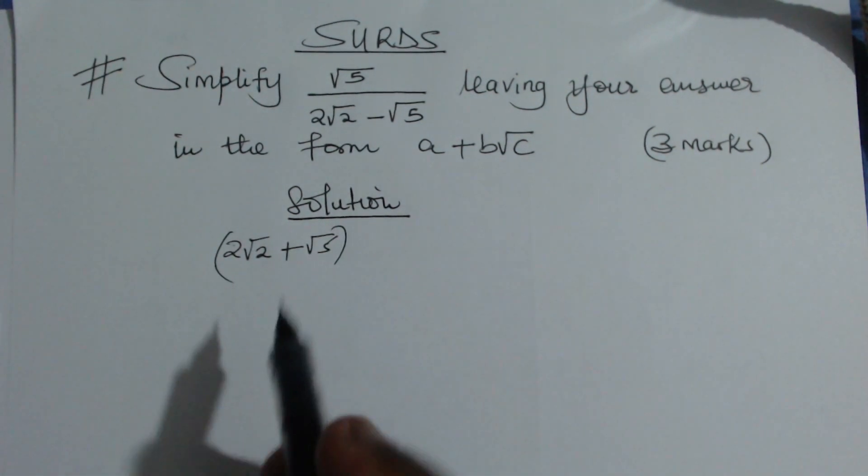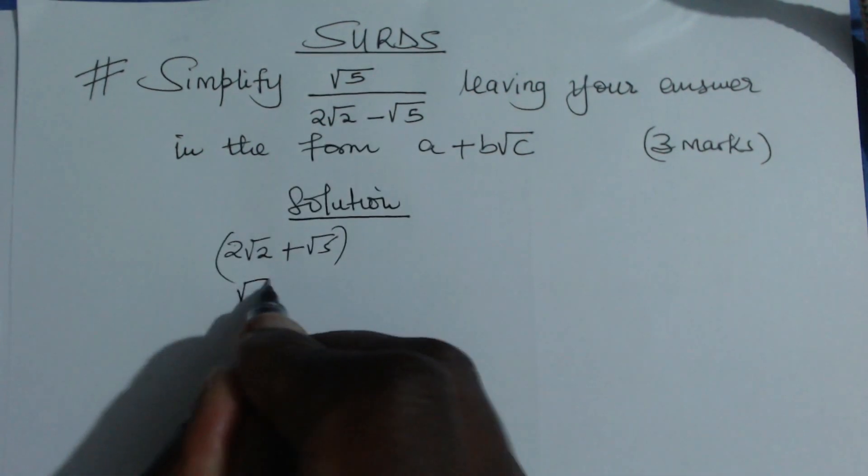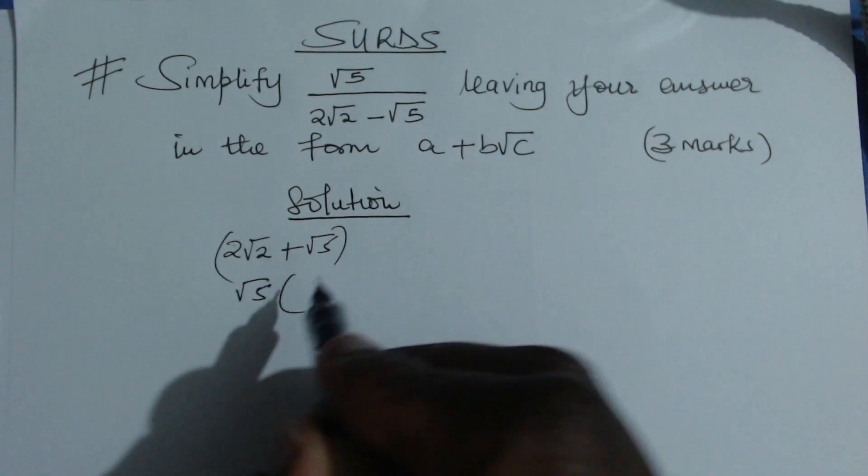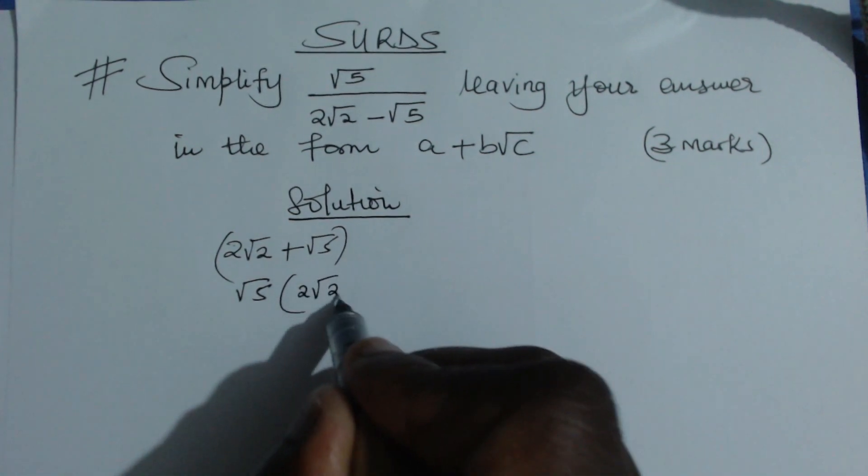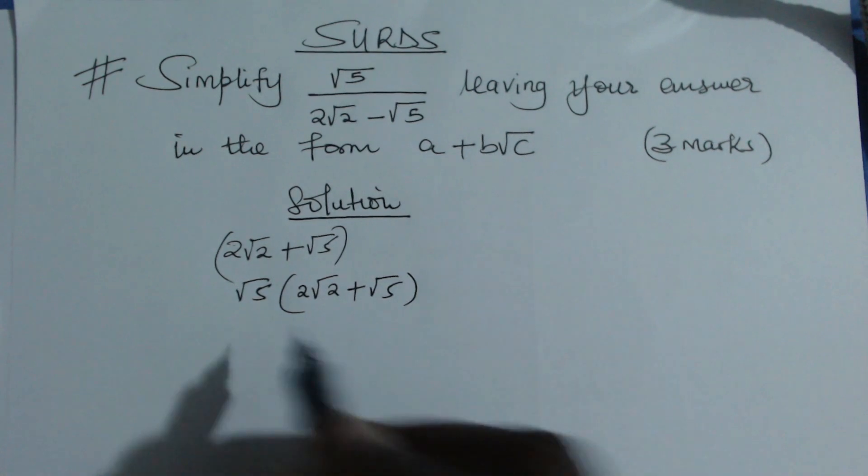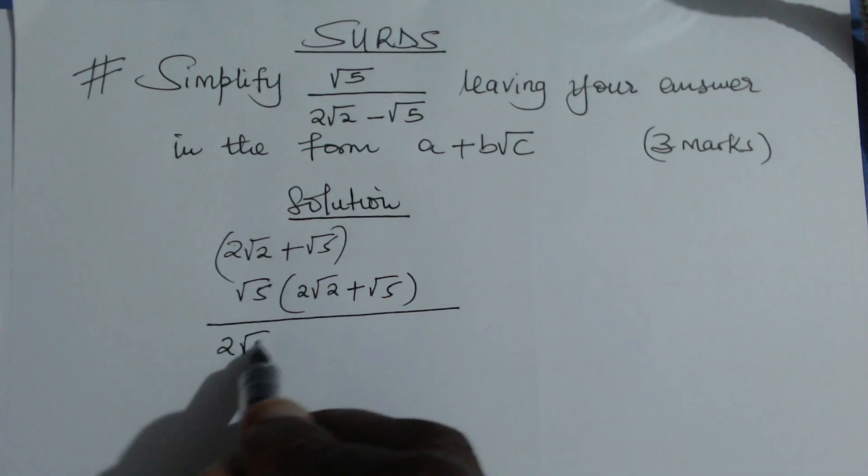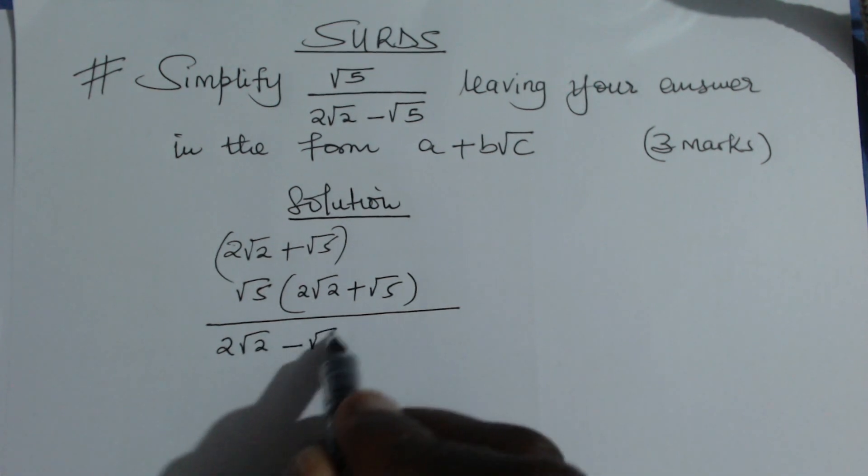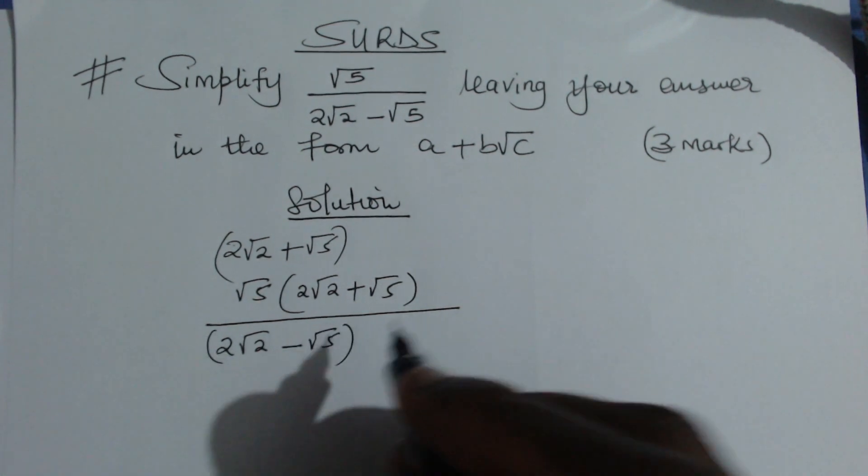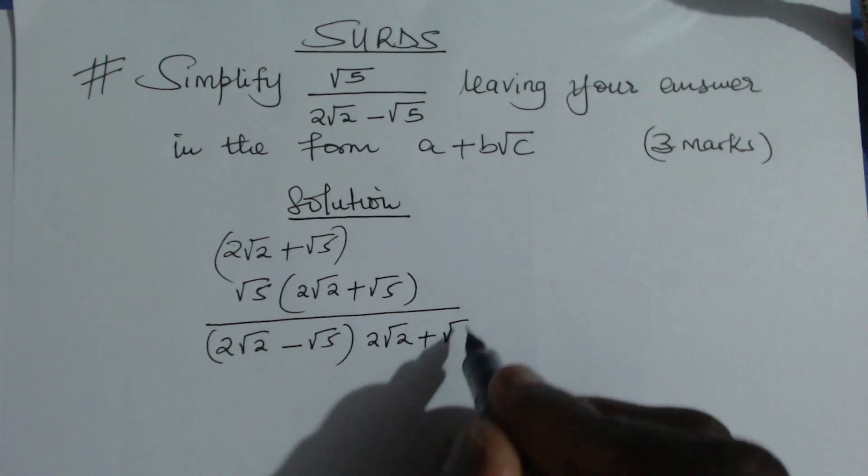The numerator is √5, so we multiply by 2√2 + √5. Then for the denominator, the same thing - the denominator is 2√2 - √5, we multiply by the conjugate which is 2√2 + √5.